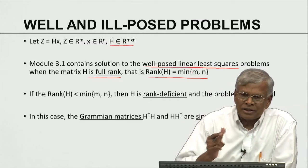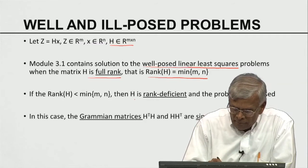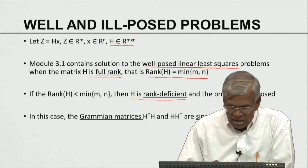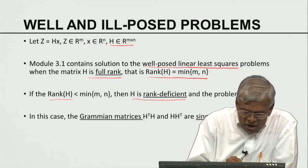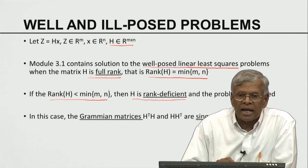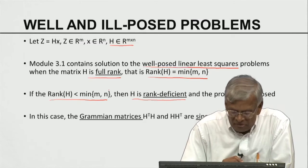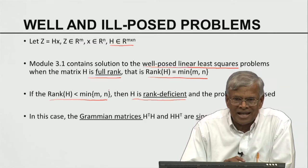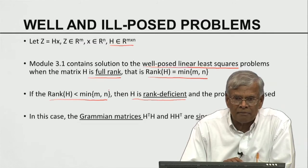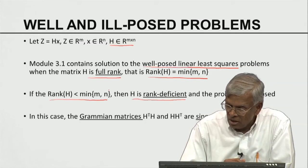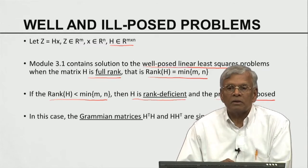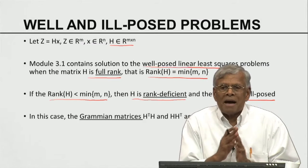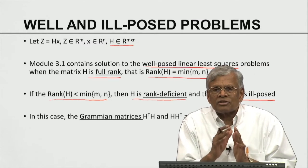Now we consider the complementary case: what happens when H is rank deficient? This means the rank of H is strictly less than the minimum of M and N — less than N in the over-determined case, less than M in the under-determined case. Such problems are called ill-posed problems. Well-posed versus ill-posed is largely determined by the properties of the matrix H, which defines the static model Z equals H of X.